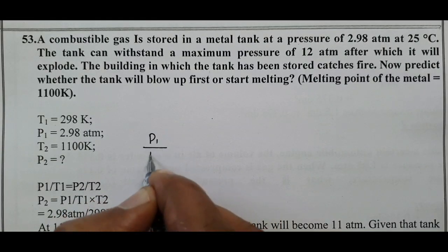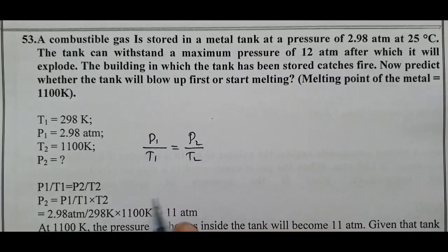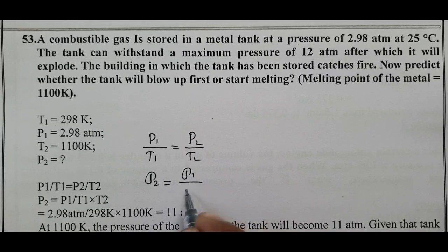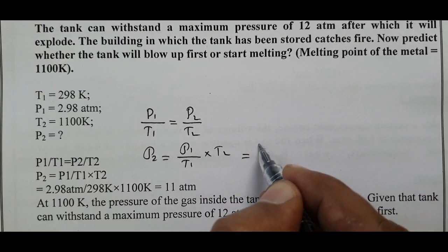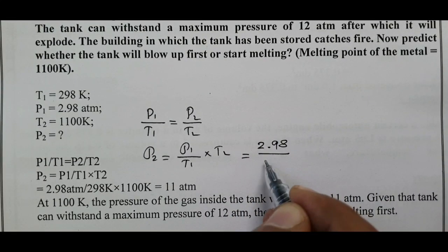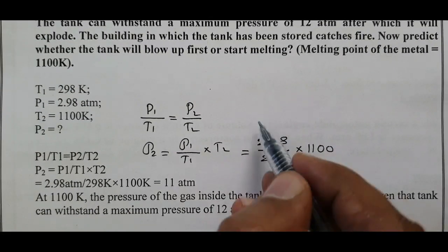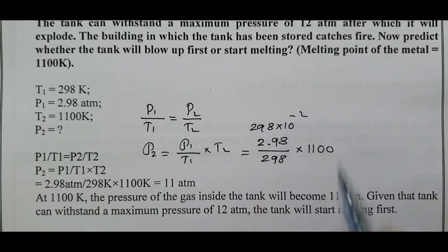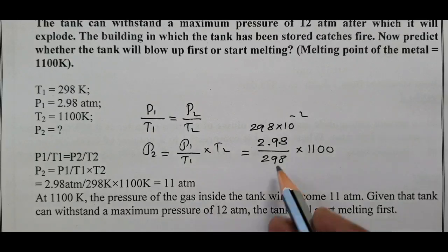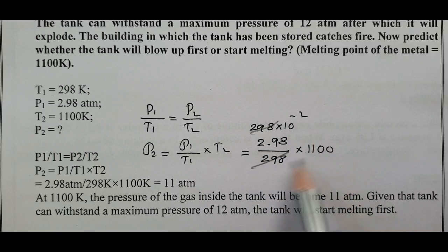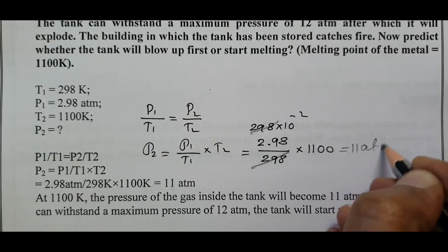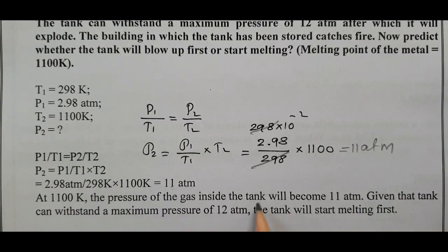P1 by T1 equals P2 by T2. P2 equals P1 by T1 into T2. Substituting values: 2.98 divided by 298 into 1100 equals 11 atm. At 1100 Kelvin, the pressure of the gas inside the tank will become 11 atm. Given that tank can withstand a maximum pressure of 12 atm, the tank will start melting first.